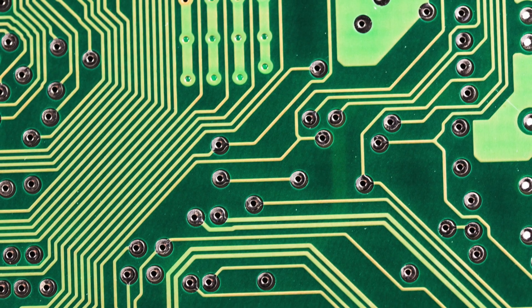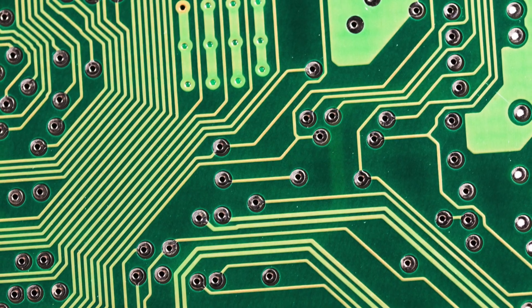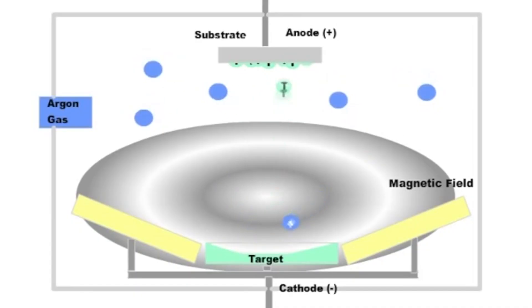So we're using a copper target and argon ions bombard the copper target, remove copper atoms. These atoms fly away and hit the surface of that chip and create a copper film.